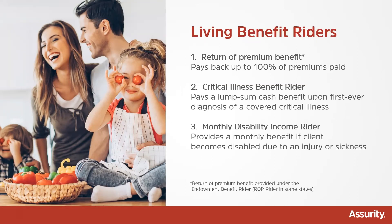Moving on from the process, I want to talk about some of the options you have on the product. We have various options to help you customize the product to fit the needs of your client. The first is the return of premium benefit, offered on this product under the endowment benefit rider. This allows the client to add the rider, and if they choose to terminate the policy on or before the level term period, they can receive a portion of the premiums back. This helps combat the idea that a client may buy a plan they may never use — they can use the return of premium rider to know they have value in this plan, even if they don't end up using the life insurance portion of it.